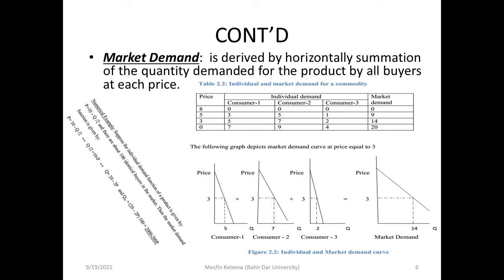Market demand is the horizontal summation of individual consumers' demand. In this calculation, it is straightforward. We look at individual demand tables and sum them horizontally. For example, when the price is stable.